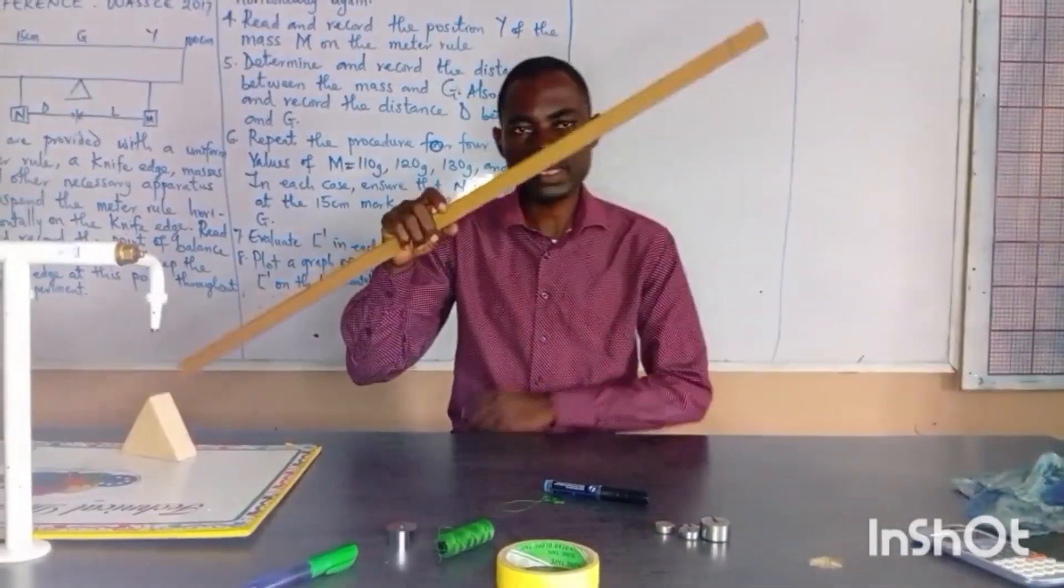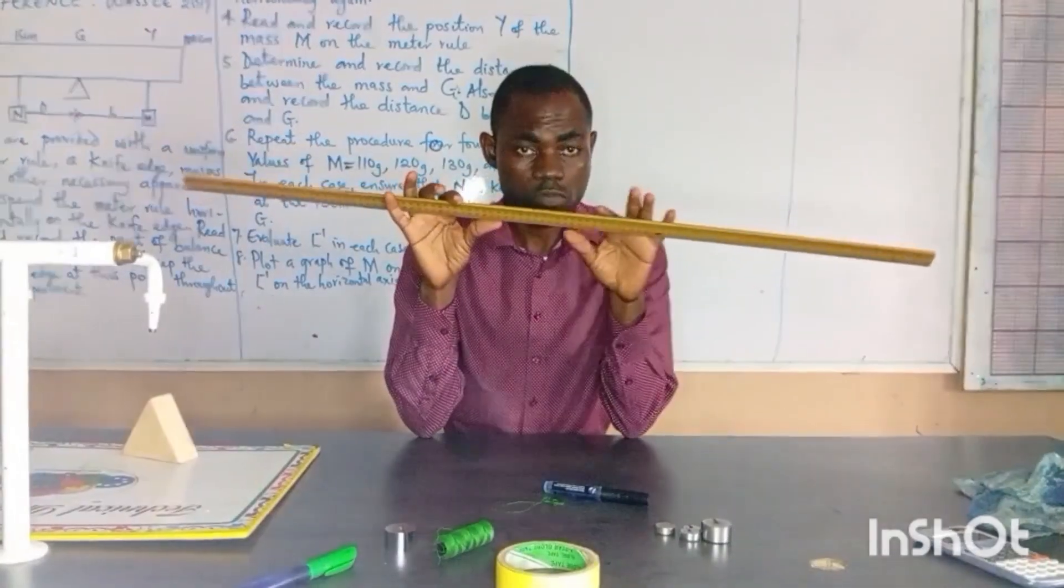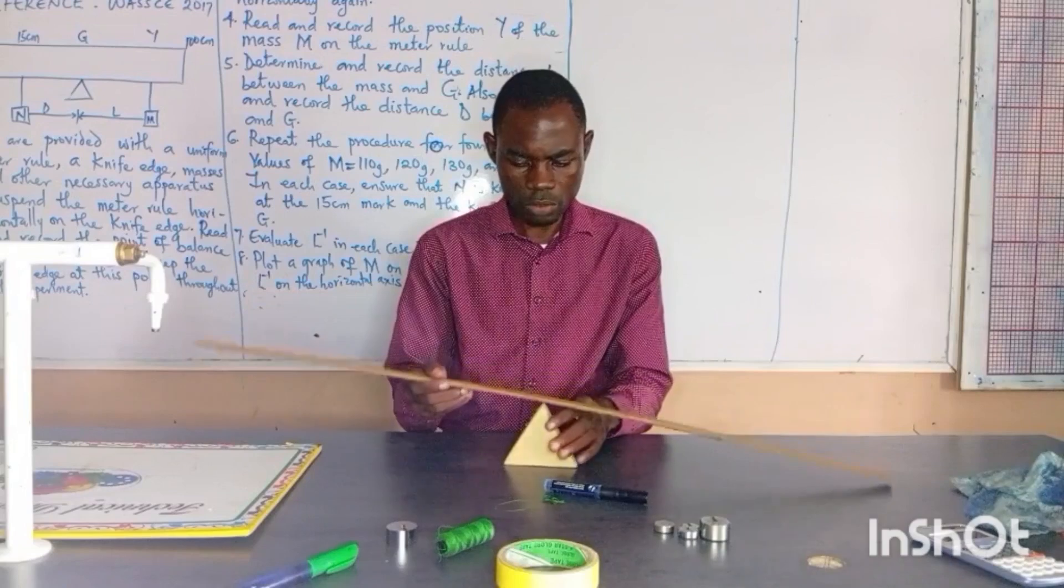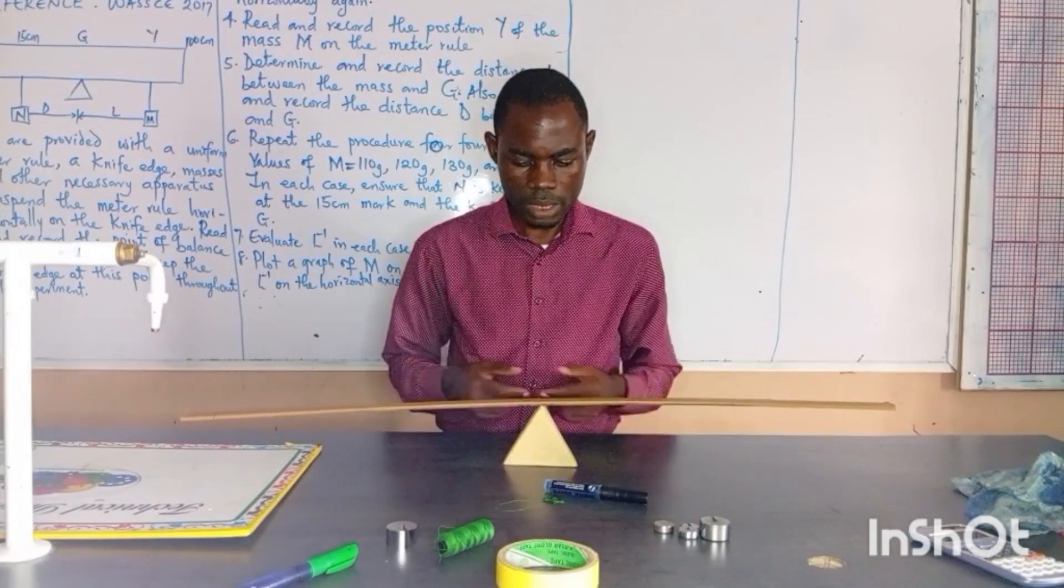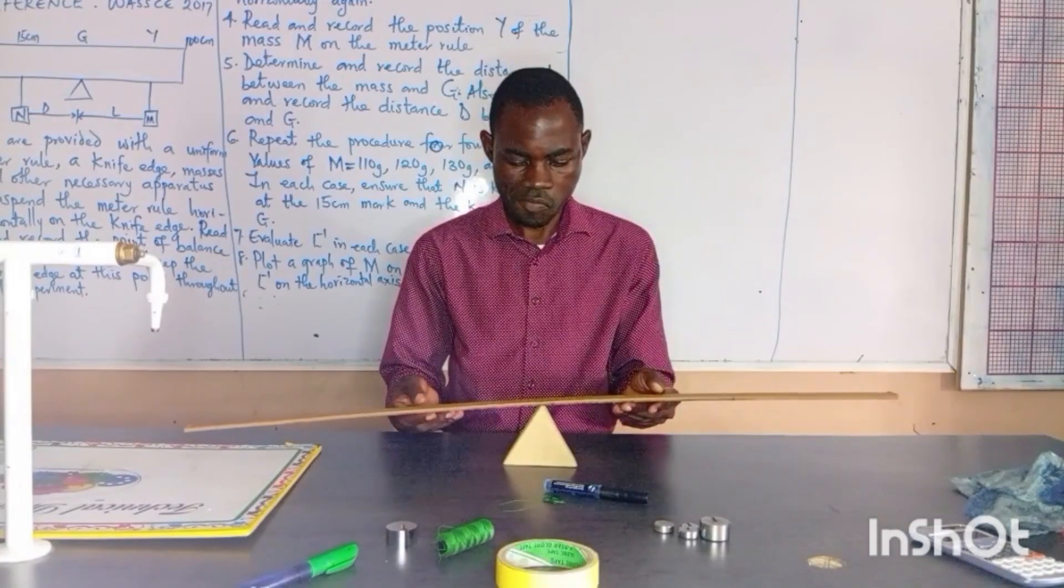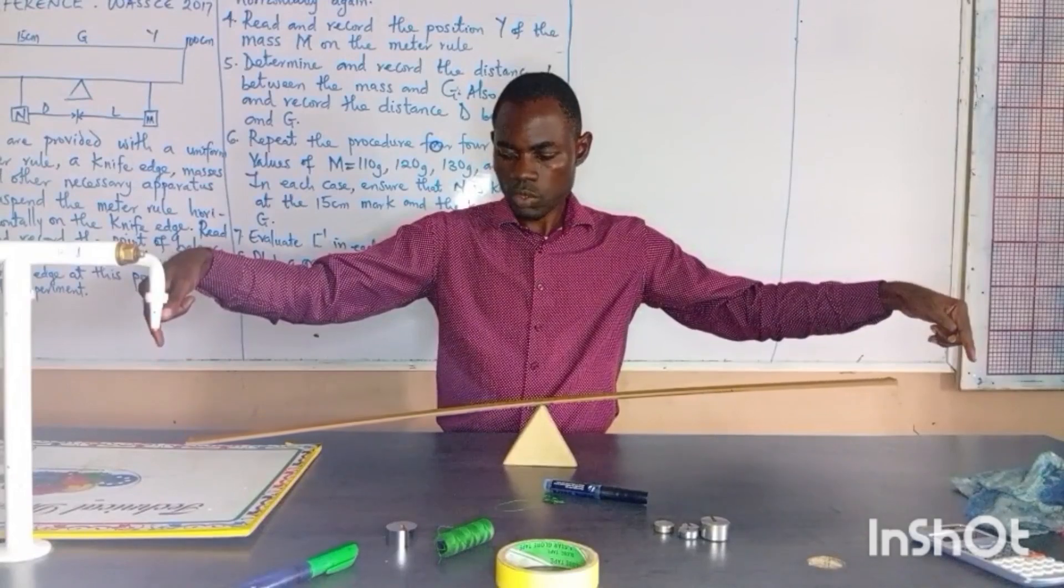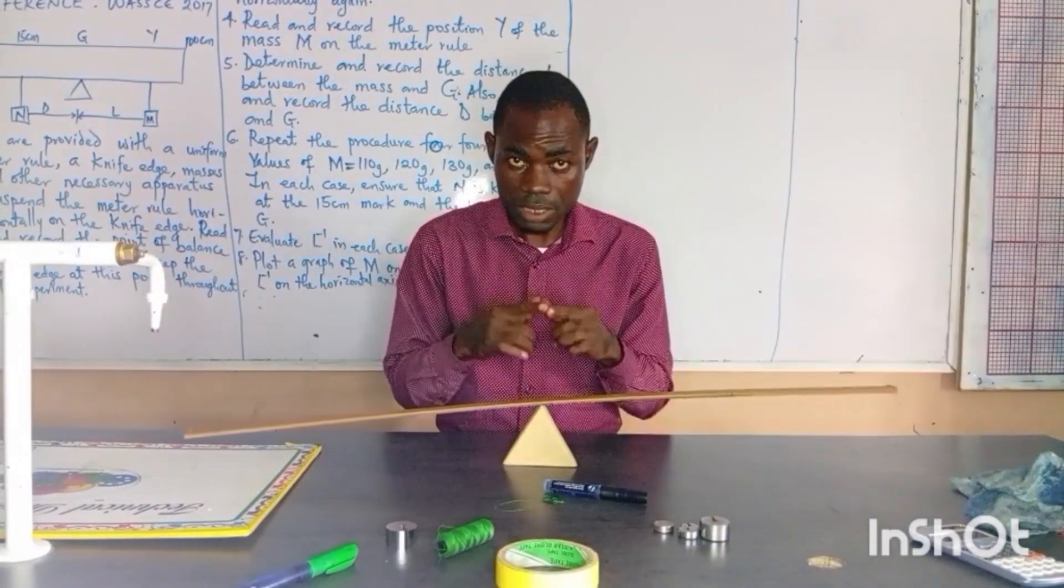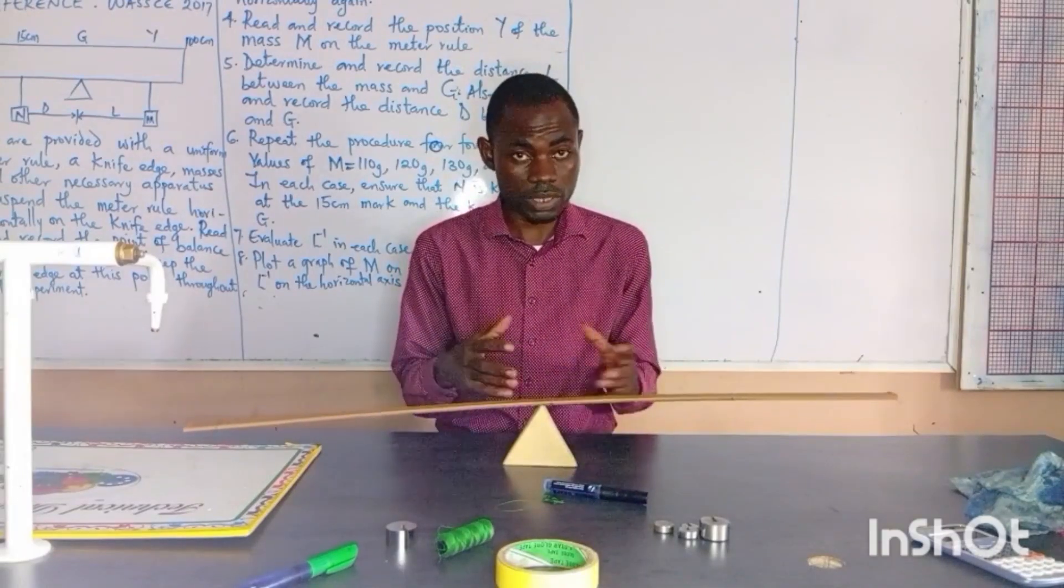I have my meter rule. It has been said in our video several times. Whenever you are carrying out an experiment on equilibrium or principle of moment, you must take the measurement of your center of gravity. That's what I want to do right now. I want to determine the center of gravity. I have told you not all time it will be 50. It depends on the material. Now this one, let me see if we can balance. You can see it's not touching anything.